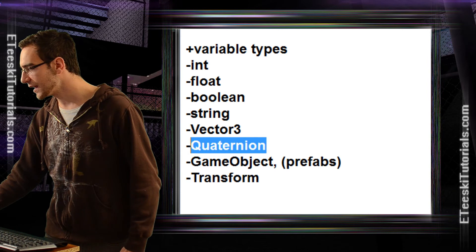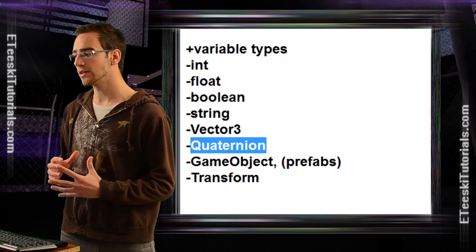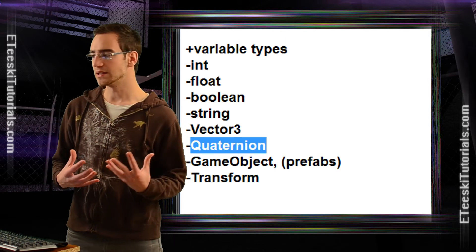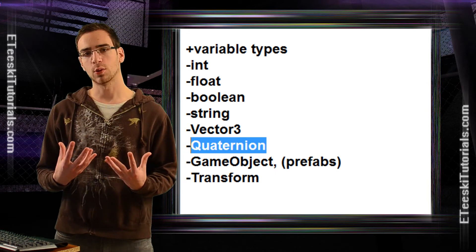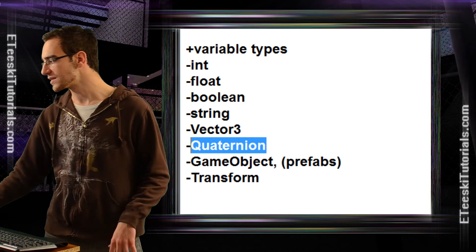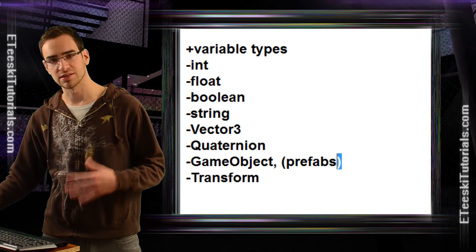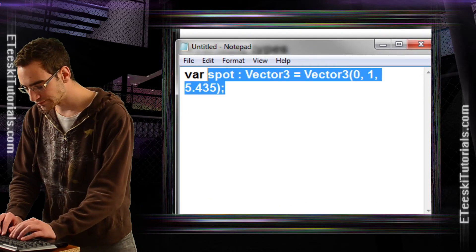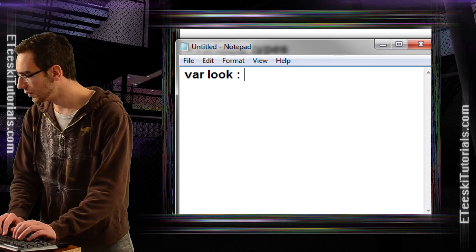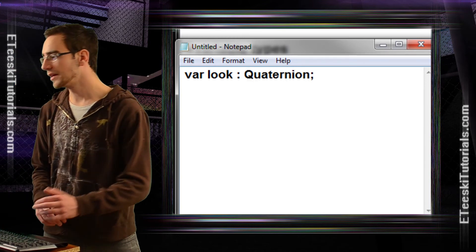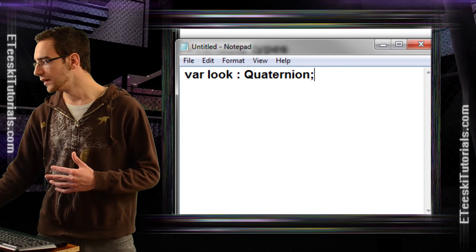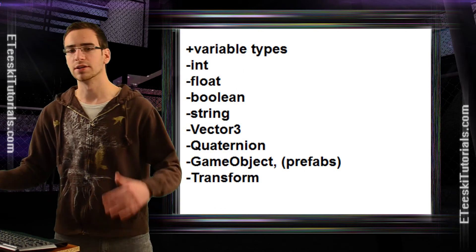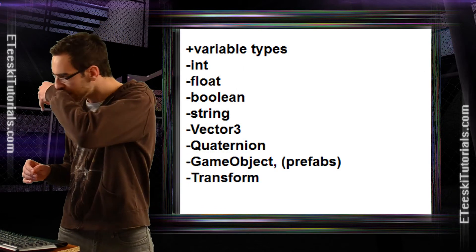The next type is a quaternion. A quaternion is almost like a vector3, except you're probably never going to want to edit it number by number in code because quaternions are really advanced. Basically, a quaternion is a rotation in 3D space. You'd declare it as: var look : Quaternion. You'll mostly just save rotations into them as variables. I'll talk more about quaternions in other episodes — just know that a quaternion is a rotation variable.